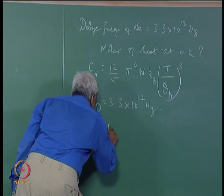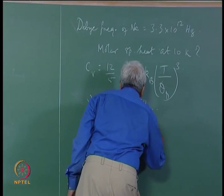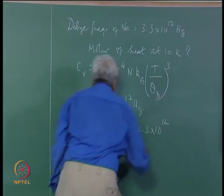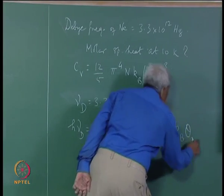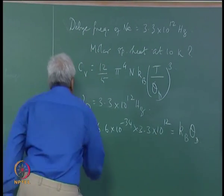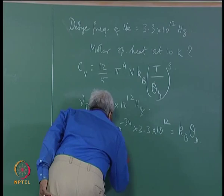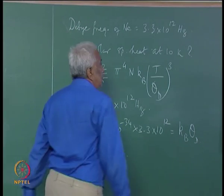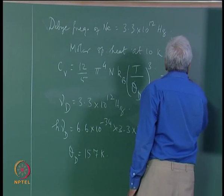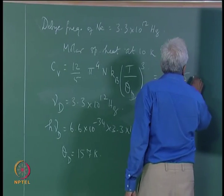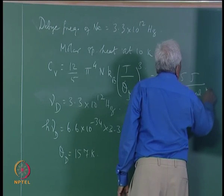We compute h·ν_D = 6.6 × 10^{-34} × 3.3 × 10^{12}, and this equals k_B·θ_D where k_B is the Boltzmann constant. θ_D works out to be 157 Kelvin. Using this, C_v is found to be 494.5 J per kg·mol per degree K.